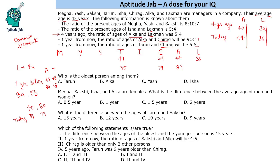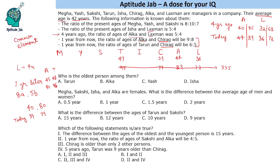In the second scenario where Alka is 89, four years ago she would have been 85. With ratio 5:4, Lakshman would be 68, giving a present age of 72. If we add those four values, they total around 335. These four people alone nearly exhaust the total, so we can safely reject Case 2.